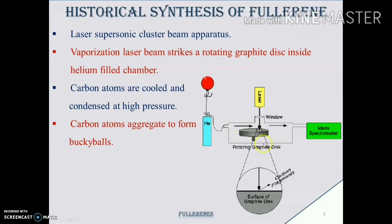The laser beam strikes the rotating graphite disc inside a helium-filled vacuum chamber. Helium is an inert gas and does not react with the gaseous carbon which is formed. Once vaporized, the carbon atoms are cooled and condensed at high pressure helium gas several degrees above absolute zero, wherein the carbon atoms aggregate to form buckyballs. However, this method has a disadvantage of low yield.